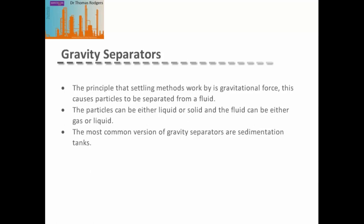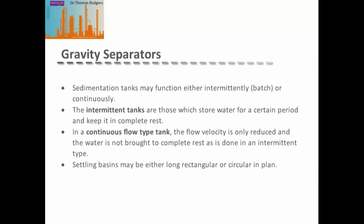Gravity separators work by allowing settling to occur under gravitational force, based on the differences in densities of the materials. The particles can be either a liquid or a solid, and the fluid can be either gas or liquid. The most common version of gravity separators are sedimentation tanks. Sedimentation tanks may function either intermittently as a batch process or continuously. In intermittent-style tanks, water is added into the tank and held at complete rest for a certain period of time, after which the water is then removed from the tank. In a continuous flow type tank, the flow velocity is reduced but the water is not brought to a complete rest.